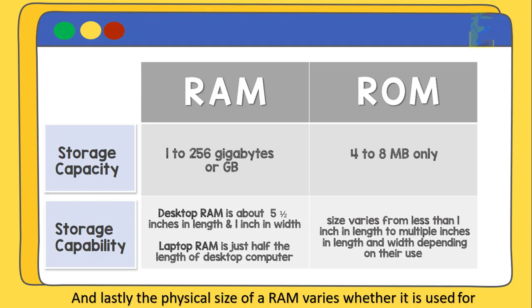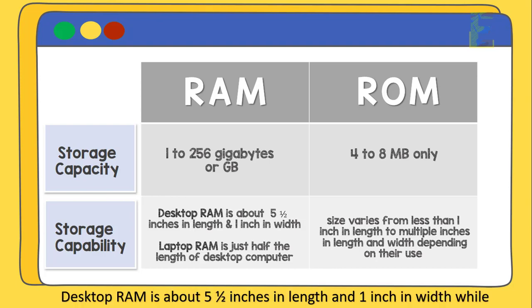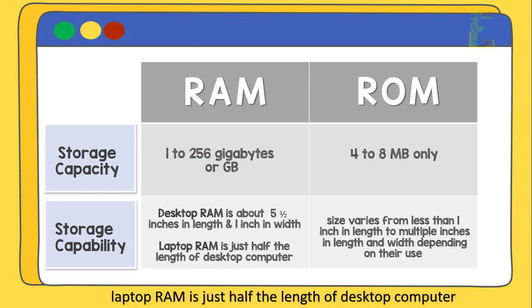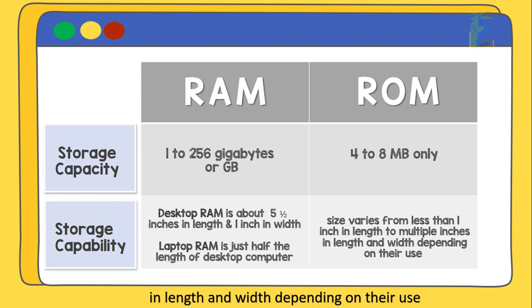Lastly, the physical size of a RAM chip varies whether it is used for a desktop computer or laptop. Desktop RAM is about 5.5 inches in length and 1 inch in width, while laptop RAM is just half the length of a desktop RAM. For ROM, the size varies from less than an inch to multiple inches in length and width, depending on their use.